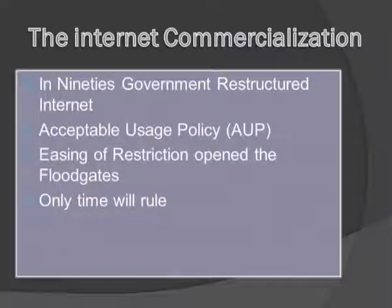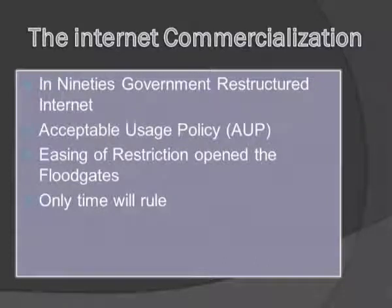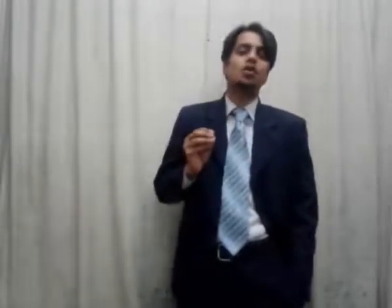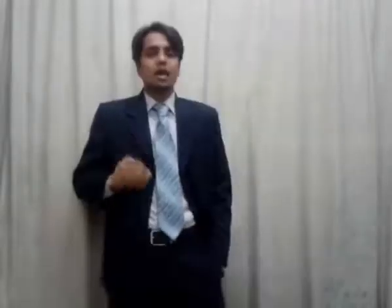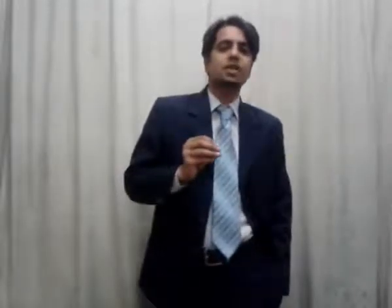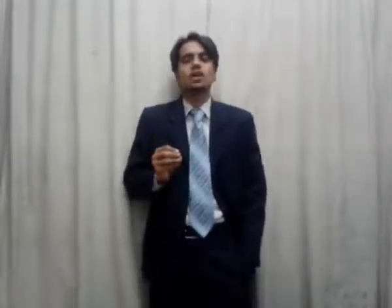Now we will move to internet commercialization. In the beginning, government was focused on not commercializing the internet because initially it was only used by the military and forces around the world. With time, government realized the need of the internet and used it to distribute information across different sectors. In the beginning, government announced AUP — Acceptable Usage Policy — under which only non-professional academics or non-professional organizations were able to use the internet for information distribution. After some time, these restrictions were also removed and a new era started.